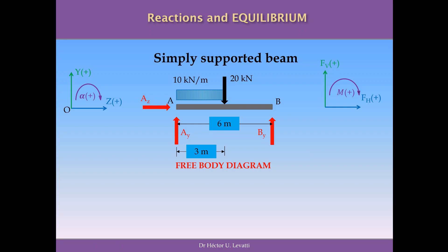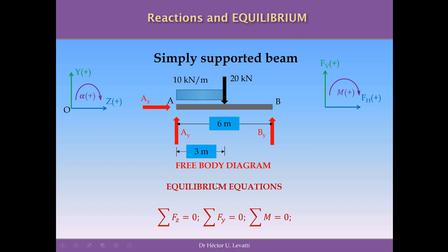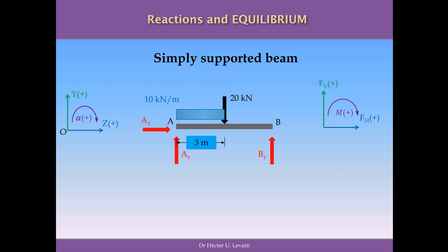Before writing the equations, we are going to introduce a simplification because the UDL would cause trouble otherwise. The equations of equilibrium we need are: summation of forces in the horizontal direction equals zero, summation of forces in the vertical direction equals zero, and summation of moments at any point equals zero. The first step is to simplify the UDL by replacing it with a concentrated force applied at its midpoint. We have a UDL of 10 kN/m across 3 meters, so 10 times 3 equals 30 kN applied at the middle of the UDL, which is equivalent in effect to the UDL itself.